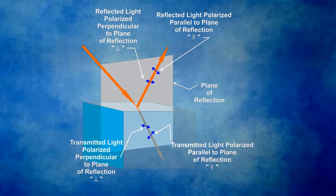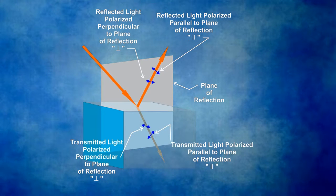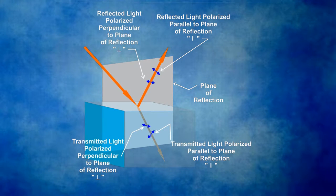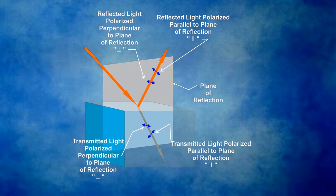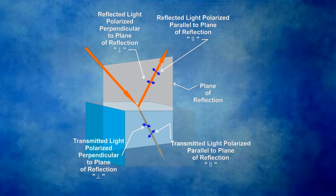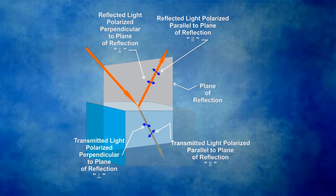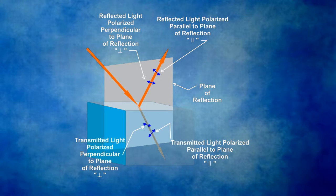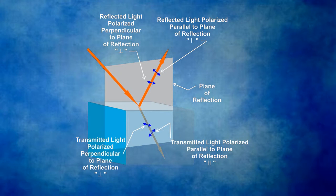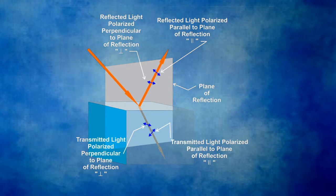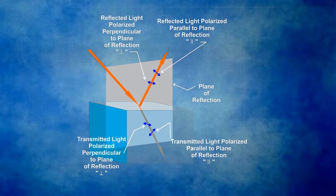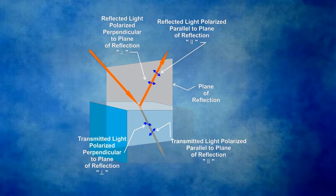When unpolarized light is incident on a surface, half of its energy is polarized parallel to the plane of reflection — we sometimes call this the P component for parallel — and half of its energy is polarized perpendicular to the plane of reflection. We sometimes call this the S component, where S stands for the German word for perpendicular. What we just saw in the demonstration is that there is a preferred direction of polarization, so the reflected light becomes partially polarized.